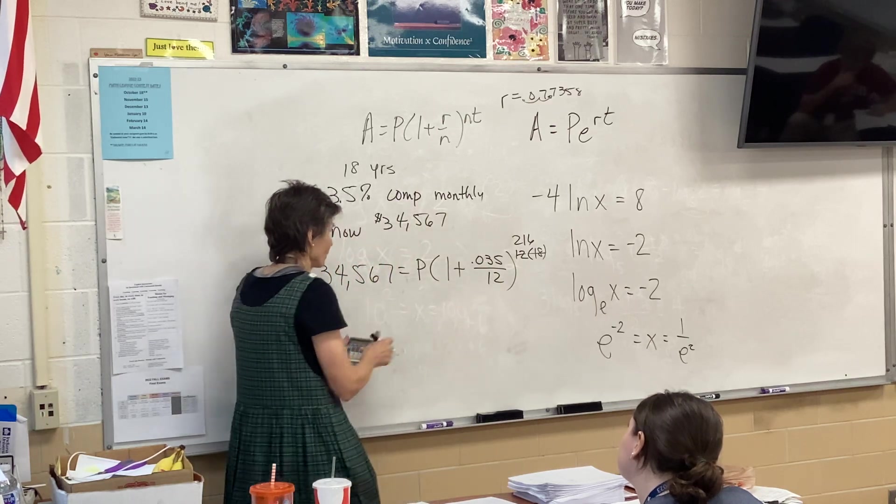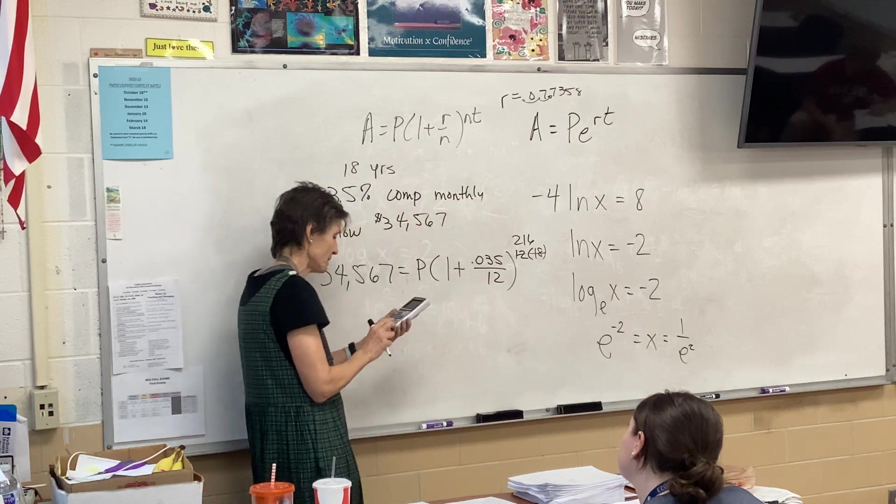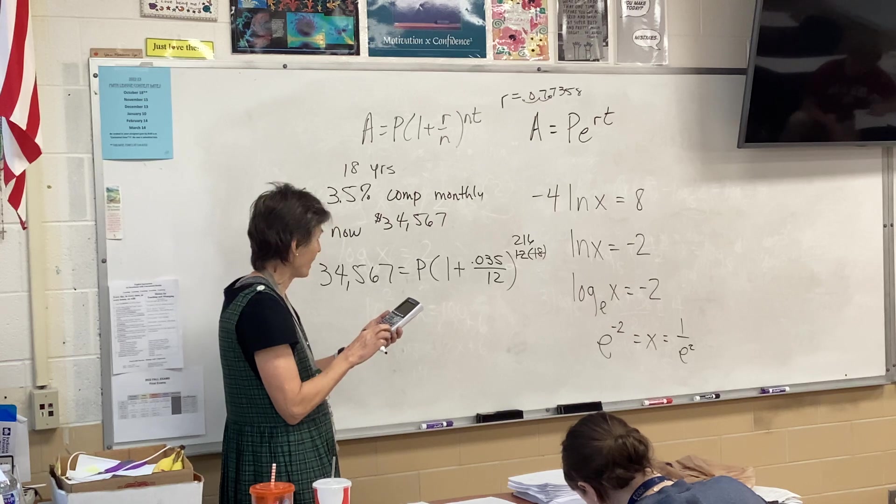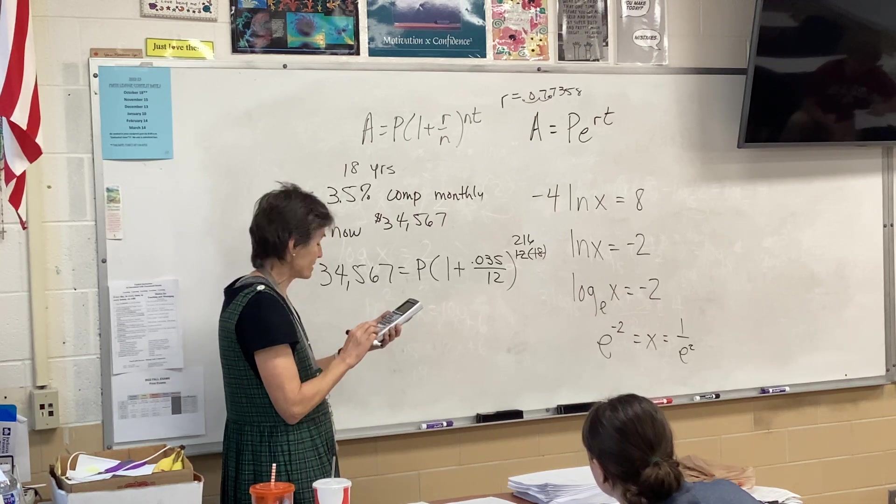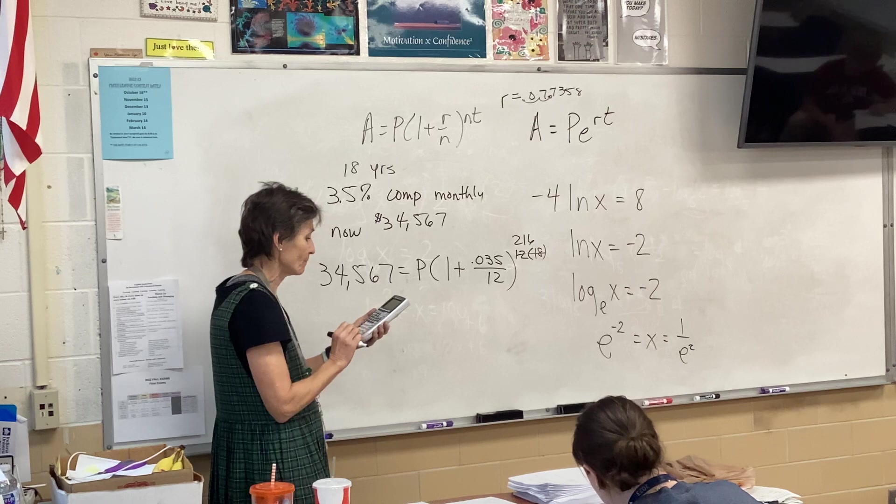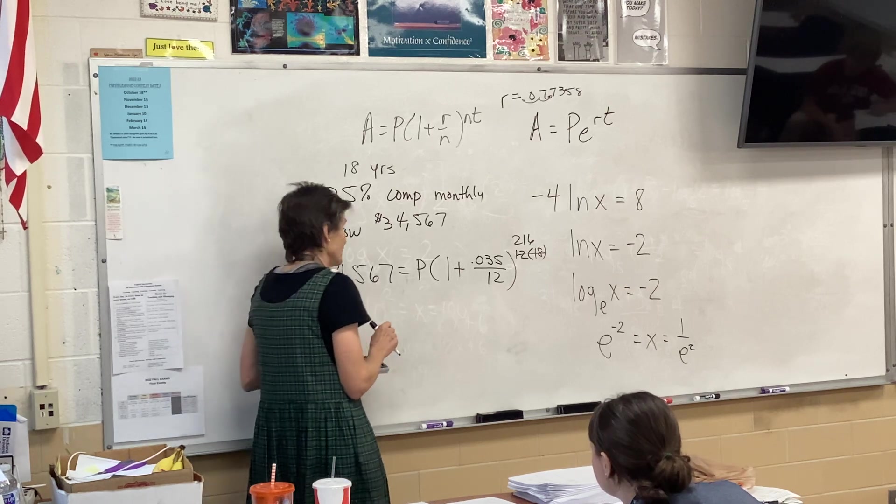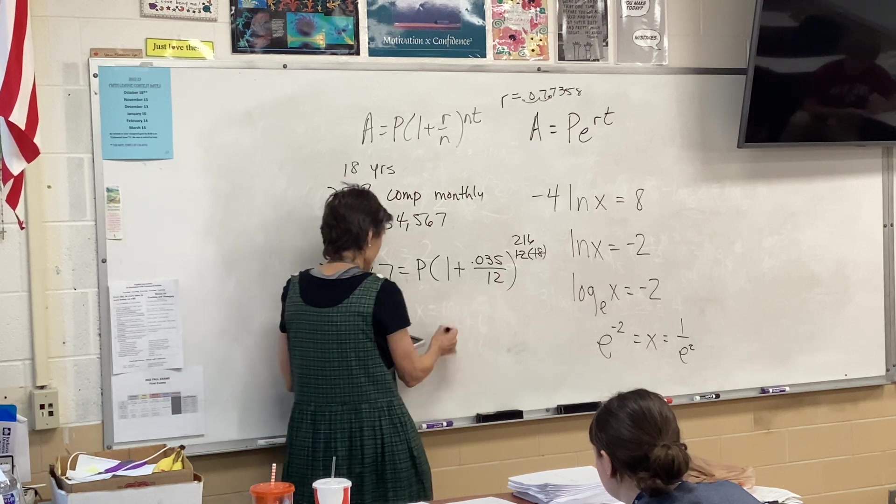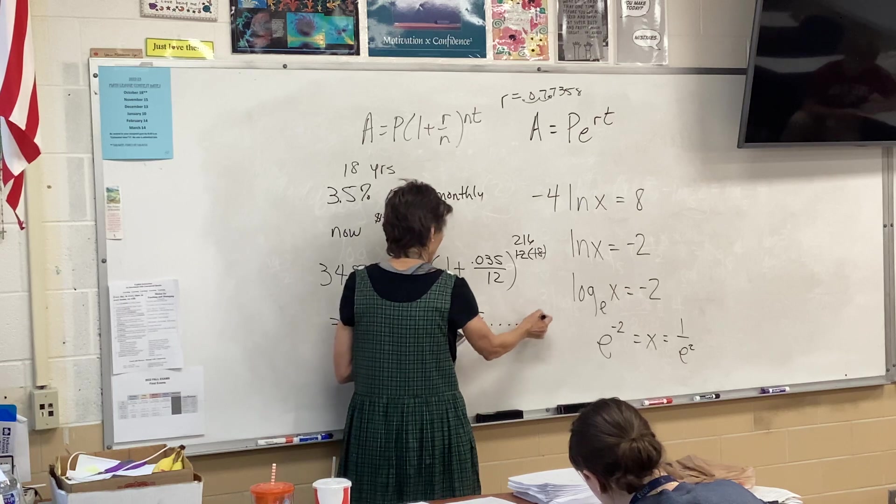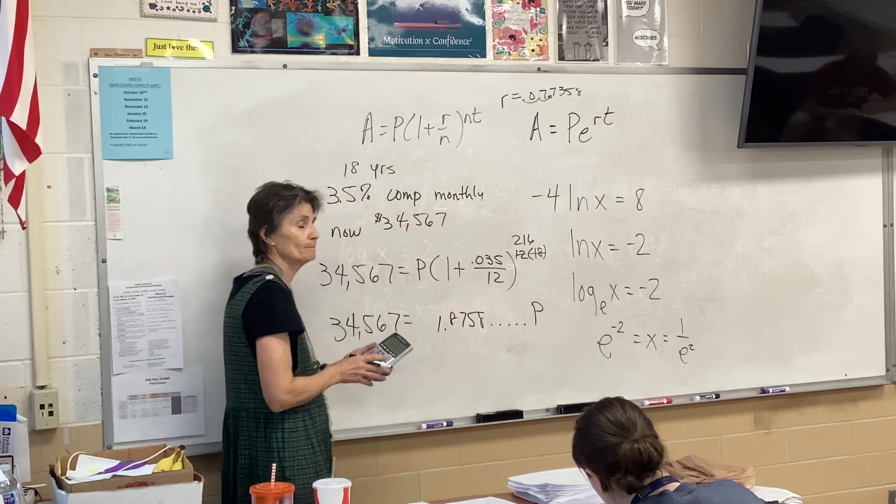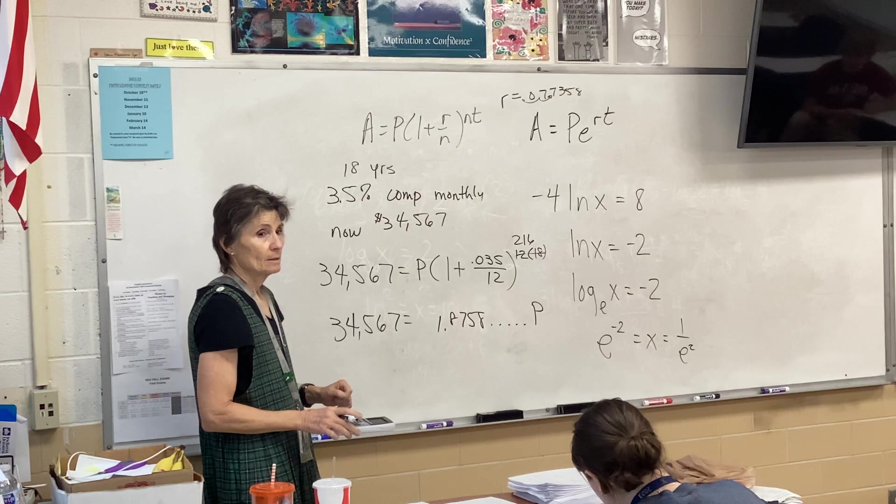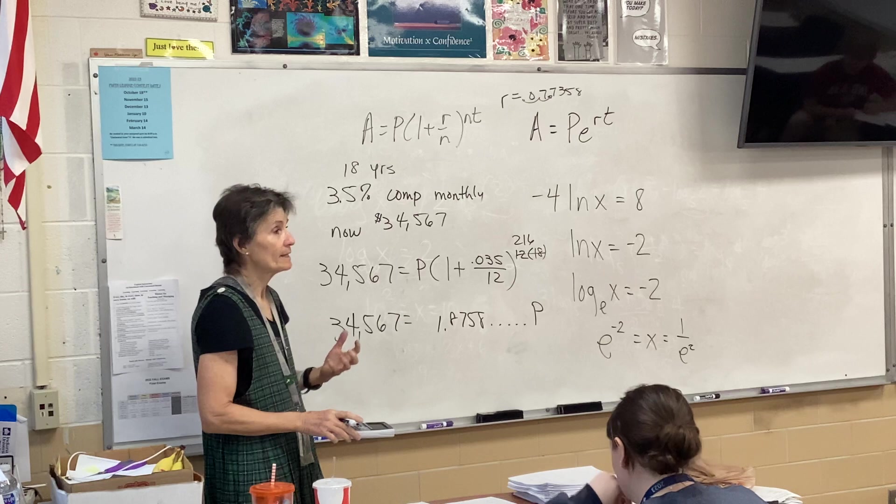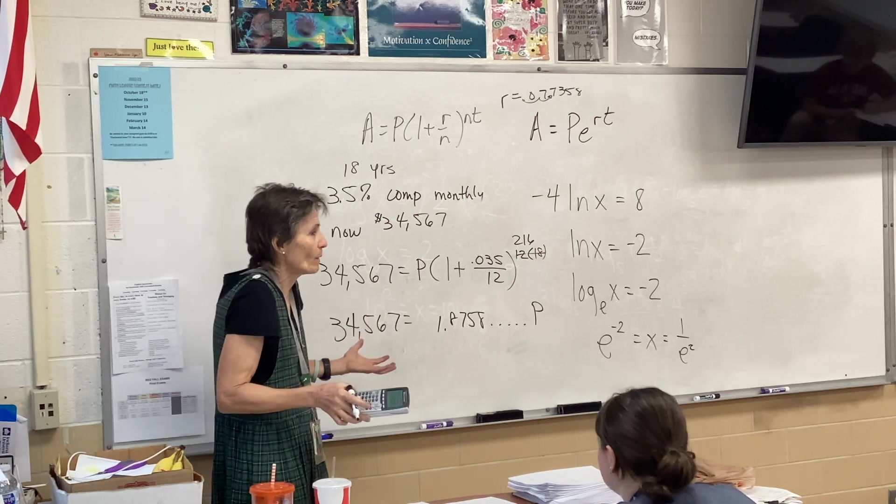Let's see what this number is that's connected to the p. So parentheses, 1 plus 0.035 divided by 12, raised to the 216. So that number is 1.8758, I'm going to go with that B. That's what I've got over here. How do I get B? What do I need to do to get B? I need to divide, right? It's a very simple equation. I just need to divide.